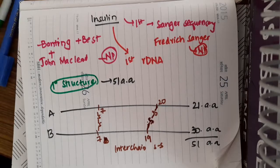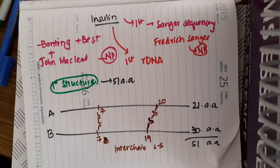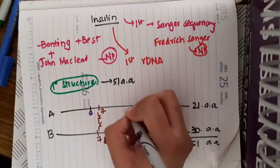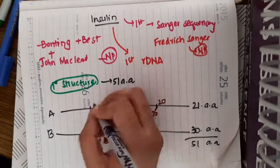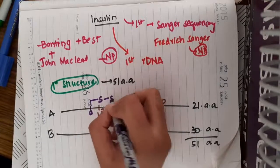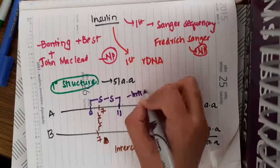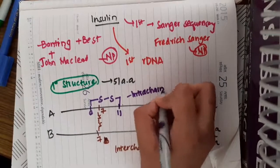We also have one intra-chain disulfide bond, which is present between the 6th amino acid and 11th amino acid. This is an intra-chain disulfide bond.